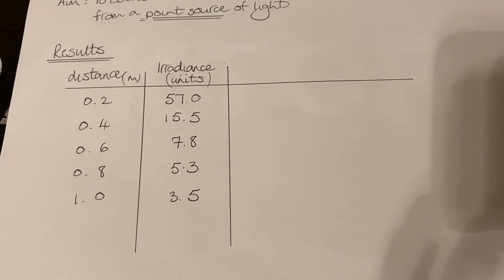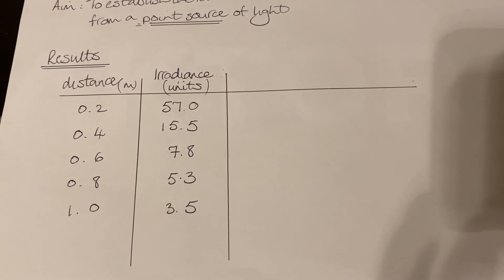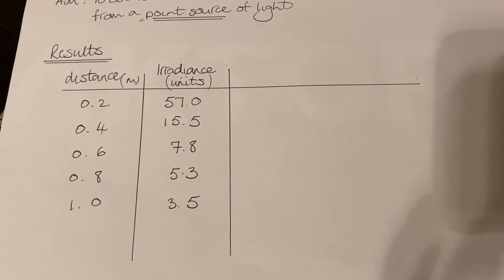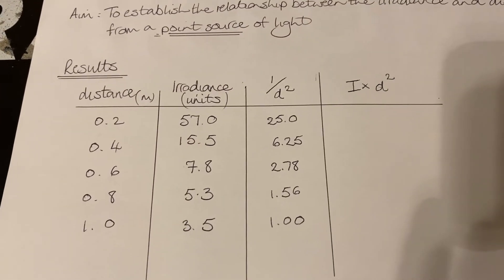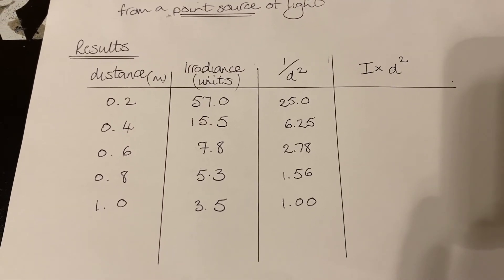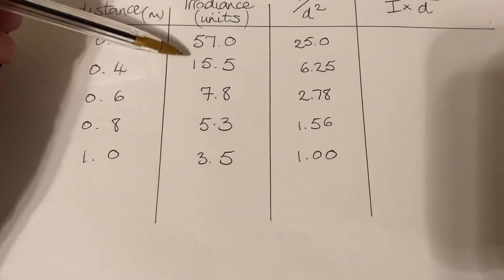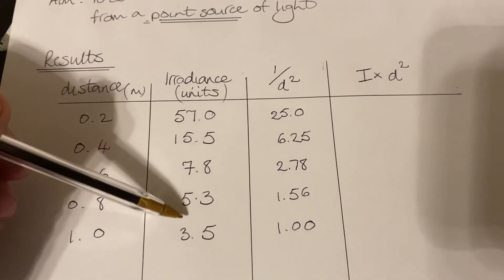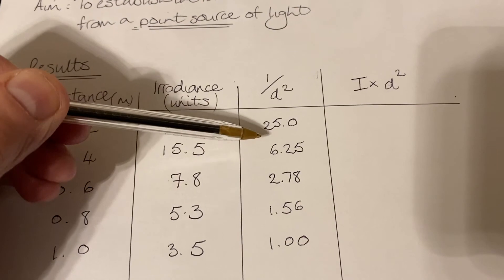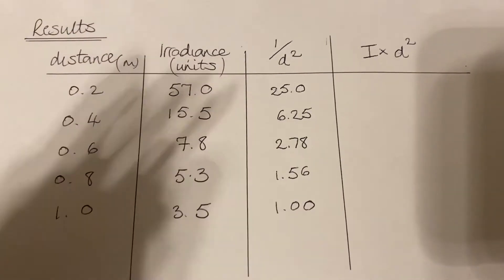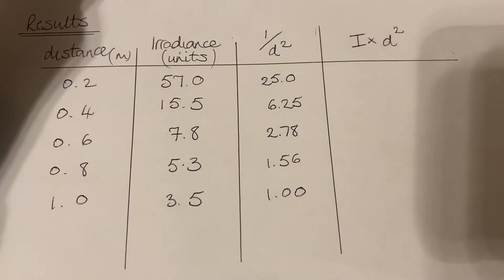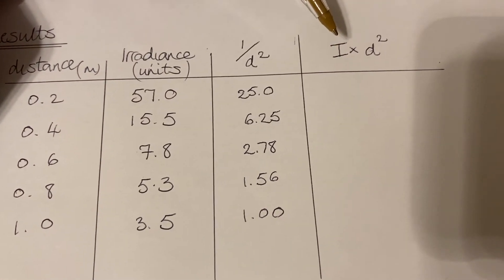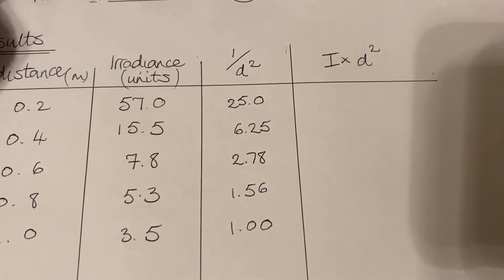To verify that, what I want to do is I'm going to do one over my distance measurements squared in another column. I have now got an extra column there, 1 over d squared, and it's nice to notice now that as the irradiance decreases, 1 over d squared is also decreasing. I'm going to draw a graph of these two. Before we do that, we'll try something else as well: I'm going to see what happens when we multiply the irradiance by the distance squared.